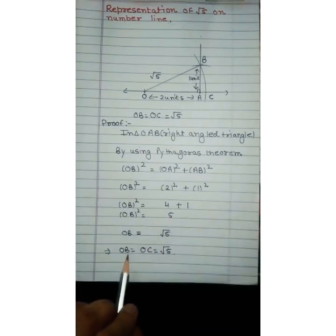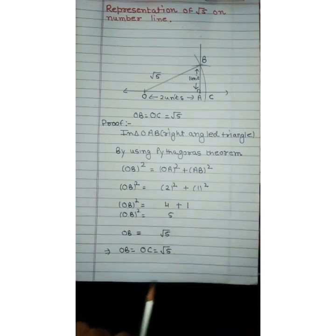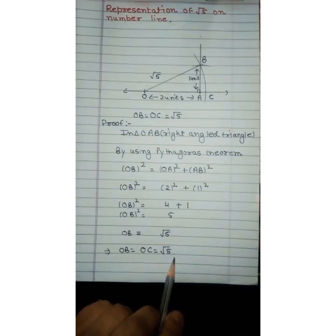So OB = OC = √5. Here we verify that OC is equal to √5.